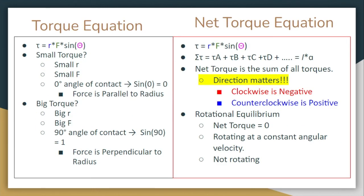So now let's go ahead and wrap things up. Initially, we talked about the torque equation on the left, and we talked about all this important stuff on when we can have a small torque and a big torque. And then on the right, we talked about the net torque equation, and it talked about the direction and how it can be positive or negative, as well as what rotational equilibrium meant.